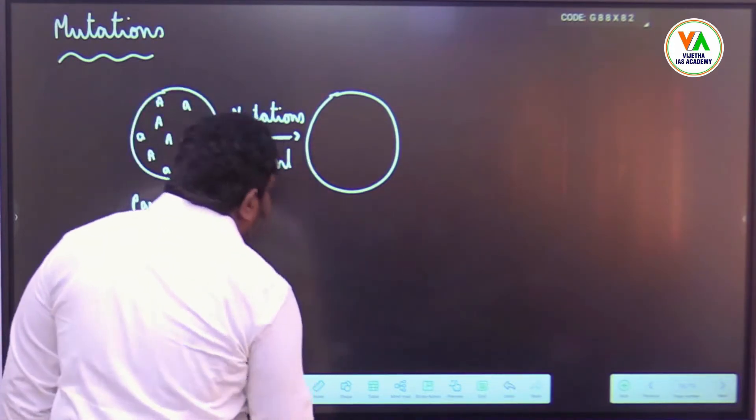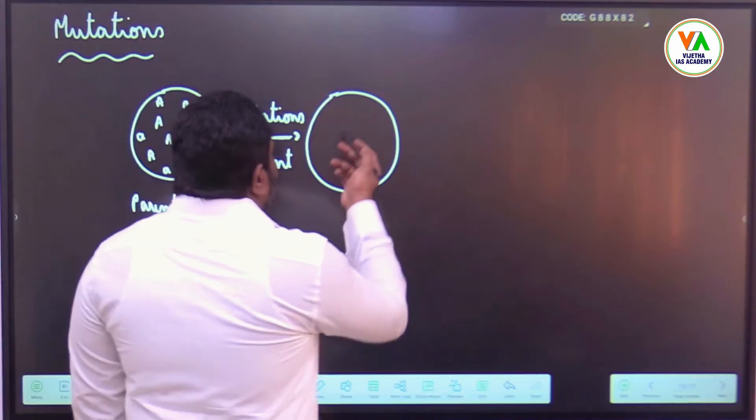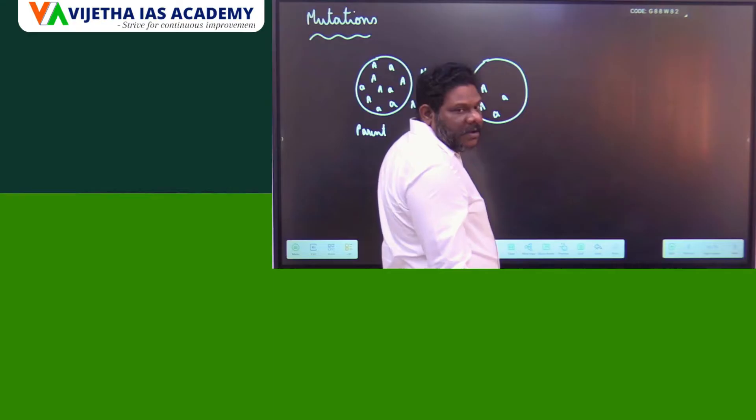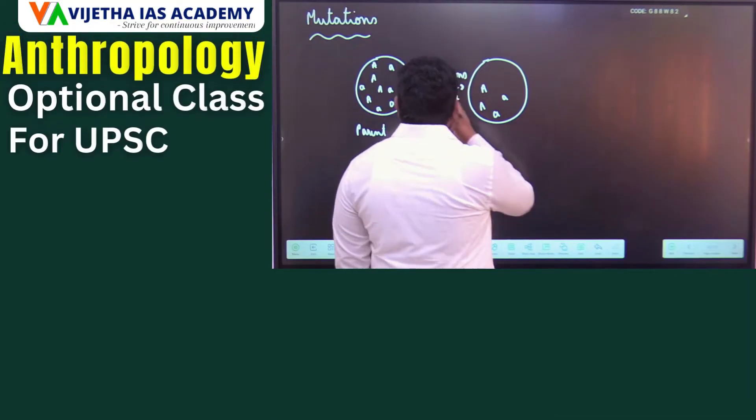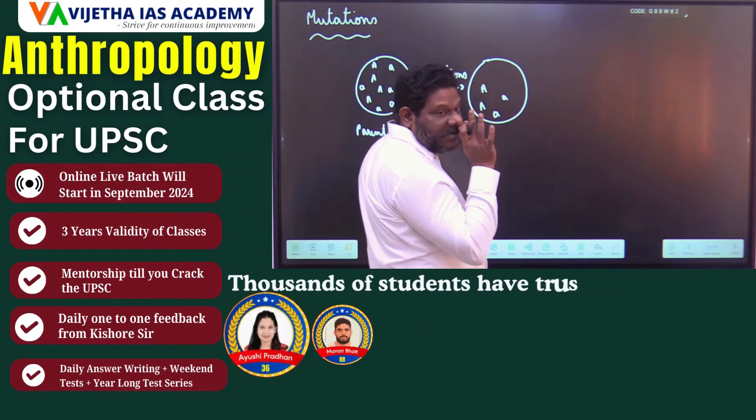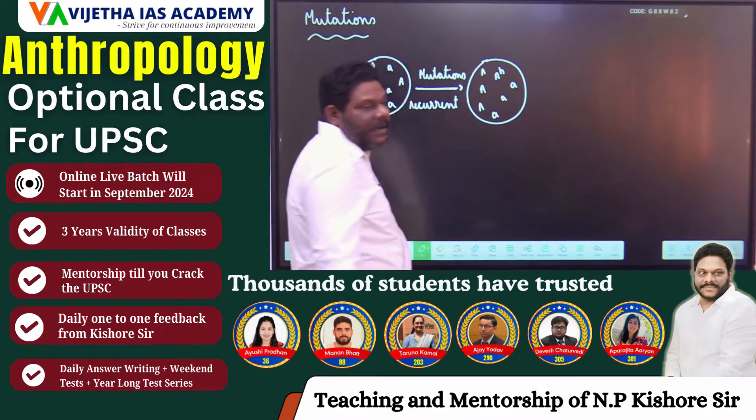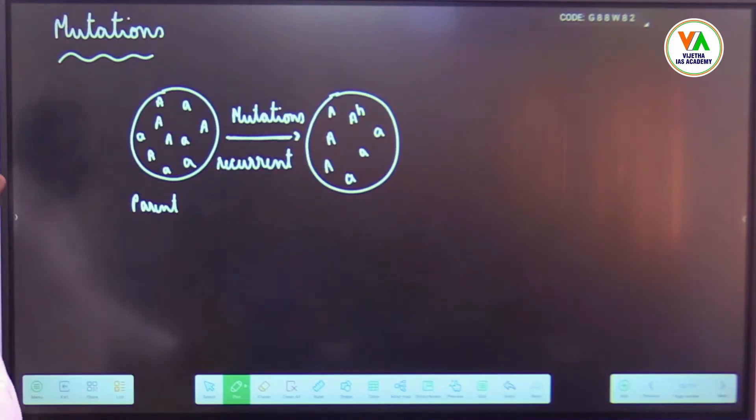Say for example, these are the common alleles of some individuals, consider that individuals only. Now introduction of a new allele capital A H. Now in this case, parent to offspring generation...